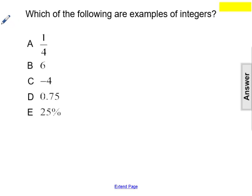Which of the following are examples of integers? A: 1/4, B: 6, C: -4, D: 0.75, or E: 25%. The definition of integers is adding the negative numbers to the whole numbers. Furthermore, this would be positive counting numbers, negative counting numbers, and zero.